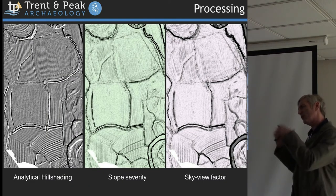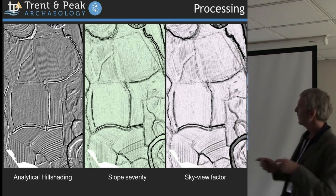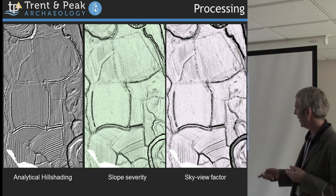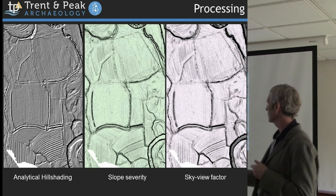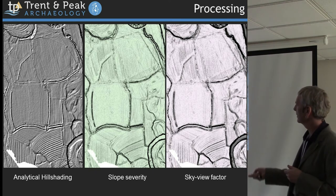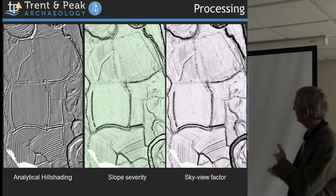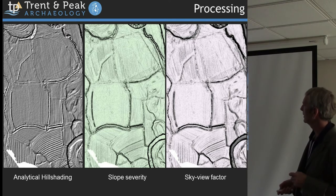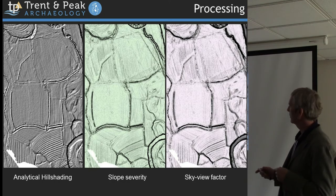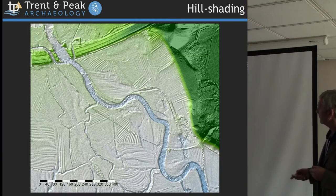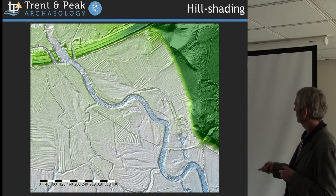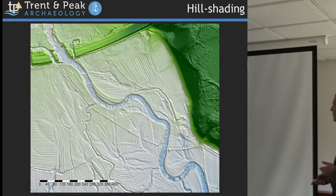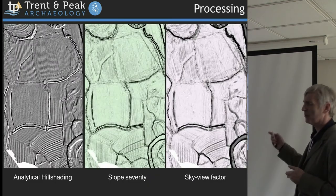There are a lot of techniques for processing and trying to get the most out of the data. Today I'm thinking more about presenting it to people in ways they can understand, because some techniques are less intuitively obvious in producing maps and plans. The three I personally find most useful are simple hill shading, slope severity, and sky view factor. Analytical hill shading is the most intuitive — if people look at that, they understand light and shade. Earthworks, ridge and furrow, water meadow systems — quite easy to look at and understand. You do have to be careful of your lighting directions, as some features will disappear entirely if you change the direction of illumination.